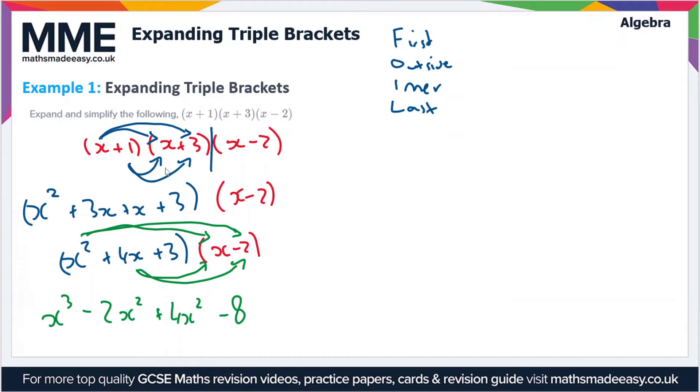Now we do the same with the 3. In fact, I'm just going to redraw that x there because it looks a bit confusing. So now we do the same with the 3 here, so we get plus 3 times x which gives us plus 3x, and we get plus 3 times -2 which gives us -6.